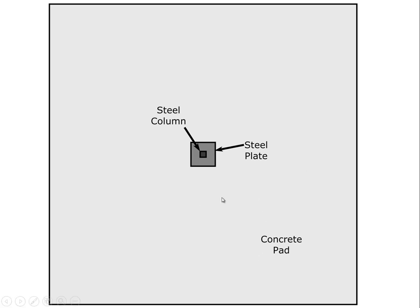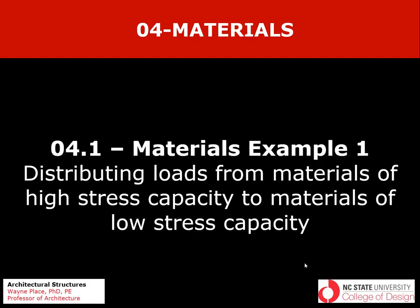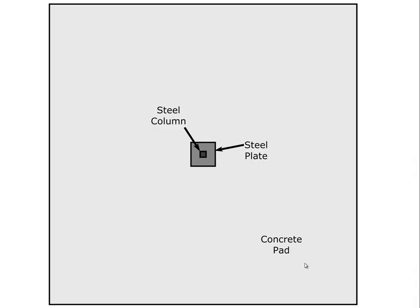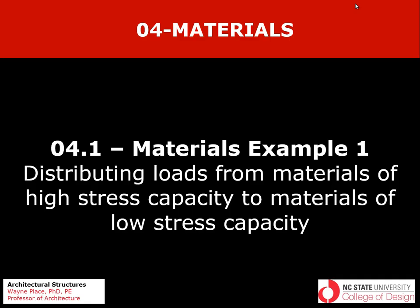To scale, we can visualize the steel column, the steel base plate, and the concrete pad, where the side length of each is the square root of its respective area. Without the base plate and concrete footing, the steel column would simply drive itself into the ground because the soil cannot resist it. That ends our example on distributing loads from materials of high stress capacity to materials of low stress capacity.